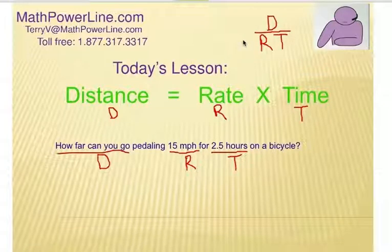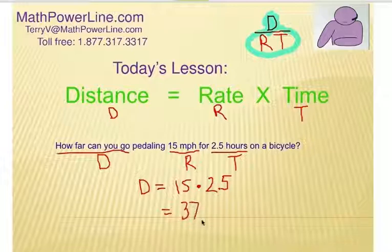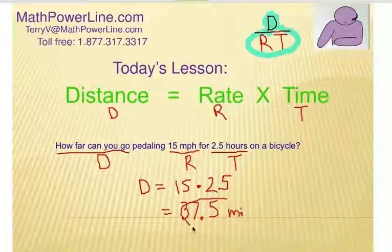All right, let's use our visual up here, and notice that D is the unknown. We're asking for the distance, how far can you go? Notice that that leaves us with R and T. What are we doing with that? We are multiplying. So we put that together, and it's 15 times two and a half, or 15 times 2.5, and that's got to be 37.5. What's our units? We're looking at distance, so that's got to be miles. So to solve for distance, we're going to multiply the rate times the time.